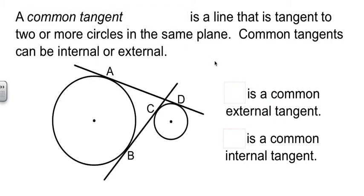When we have multiple circles on the page, or in our diagram, any line that is tangent to more than one circle is called a common tangent for those circles. And they can be internal common tangents or external common tangents.